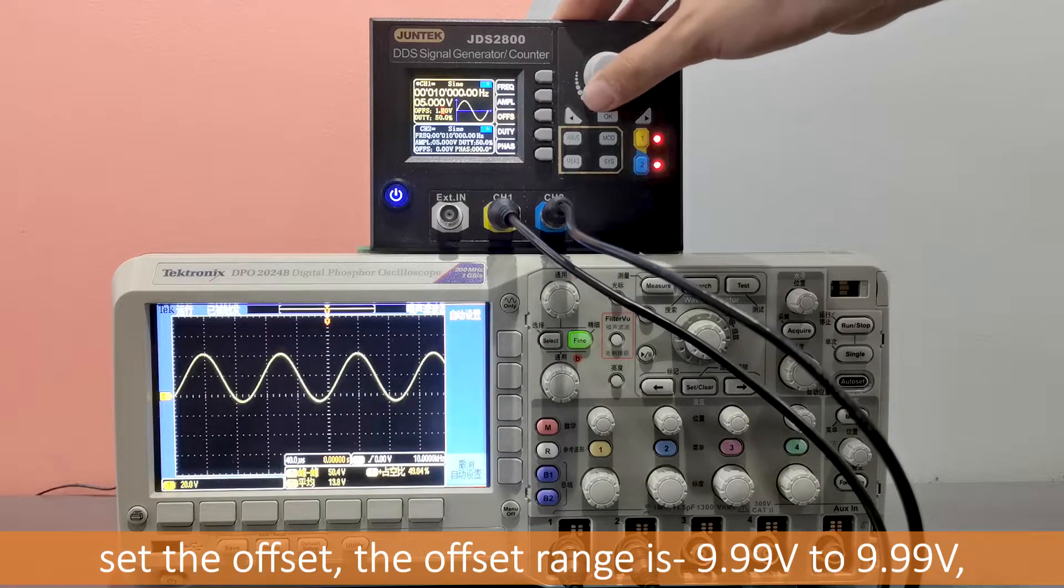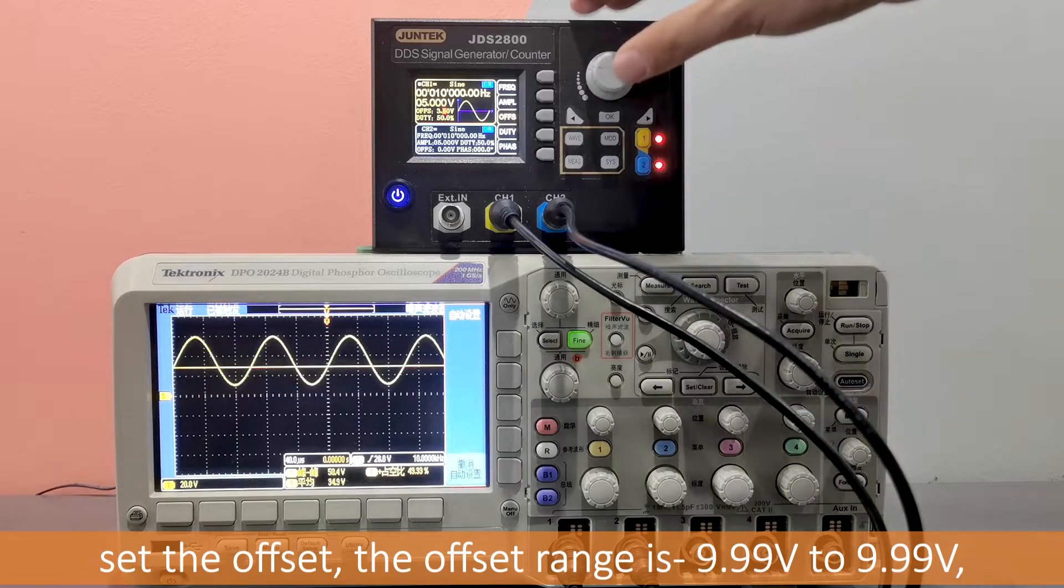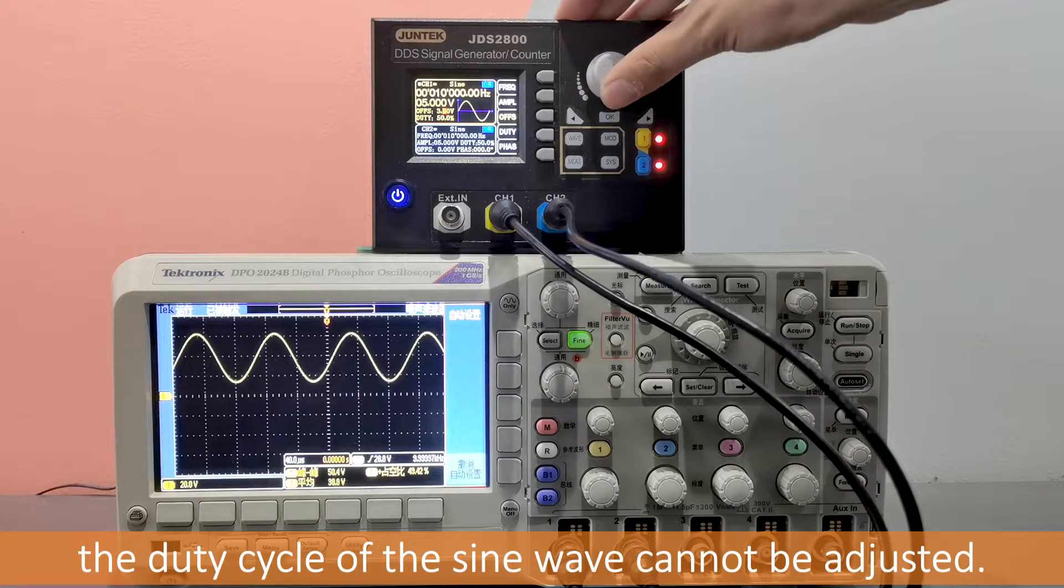Set the offset. The offset range is -9.99V to 9.99V. The duty cycle of the sine wave cannot be adjusted.